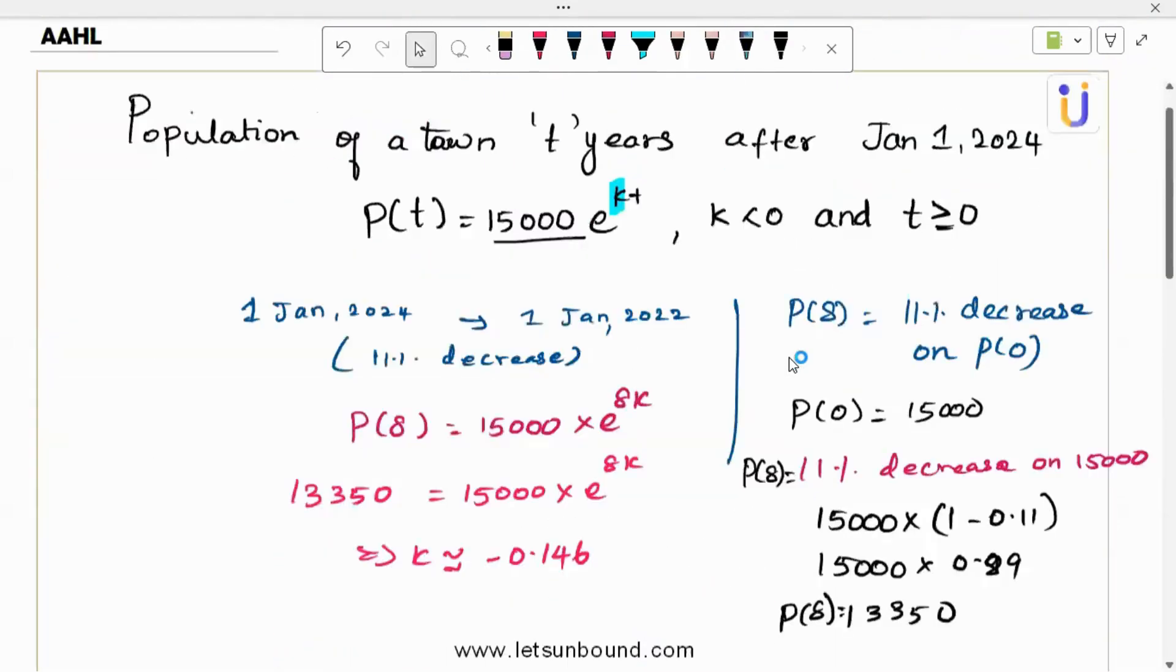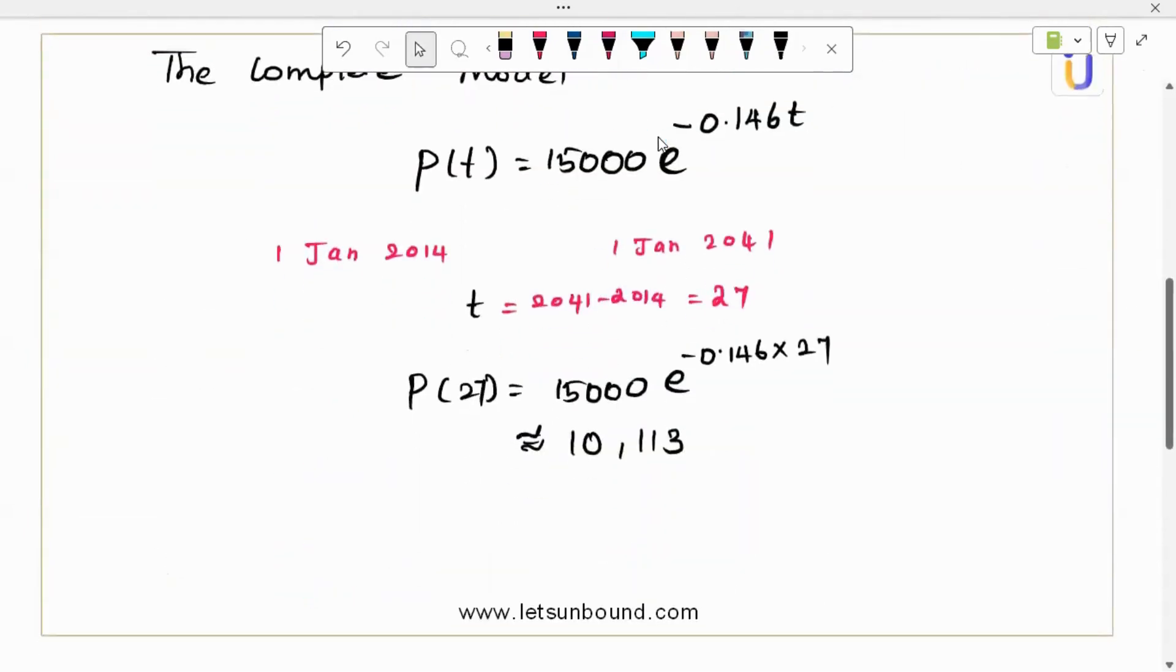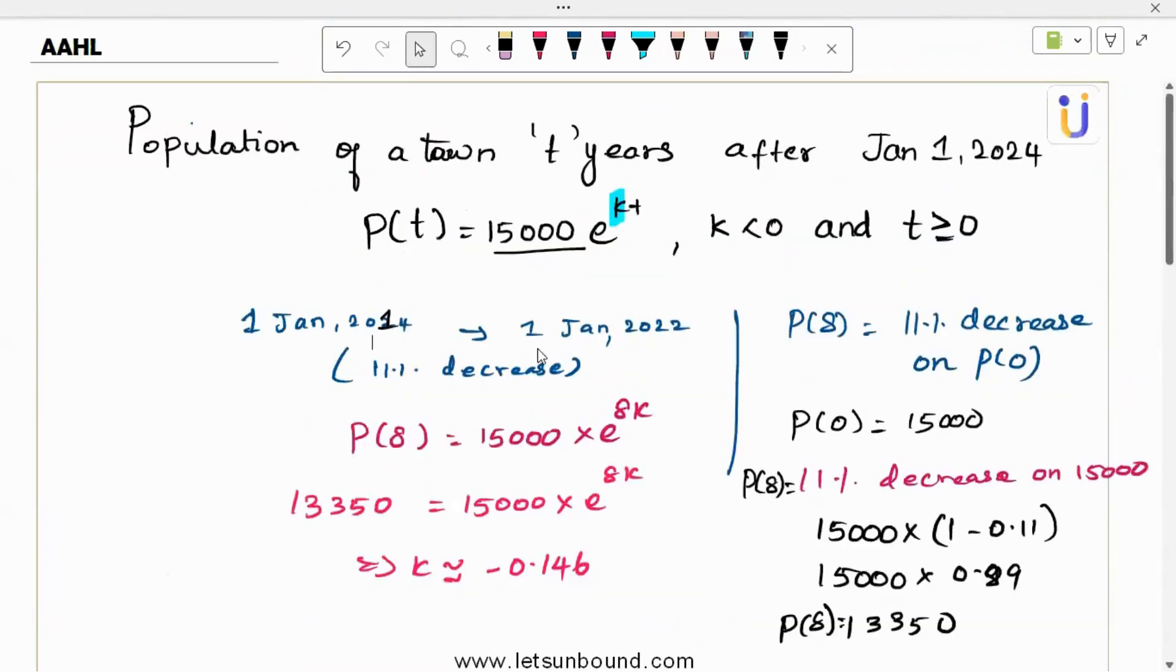That's simple. So just a quick recap, they gave a population model with one unknown k. So we find k with the clue they have given from January 1, 2024 to 2022, and it got this much decrease. We work on it, solve for it, then after making the complete model we just find the required number of years which is 27 and we solved it. It's 10,113. So that's it, thank you for listening.